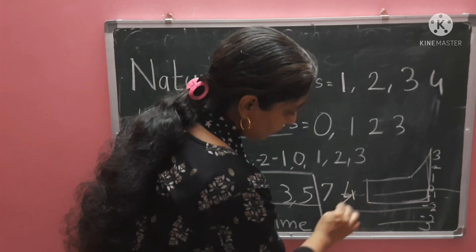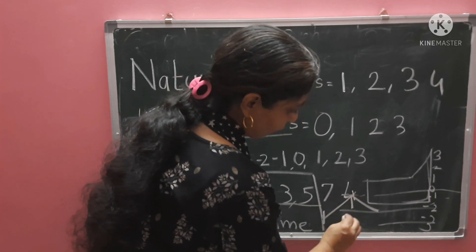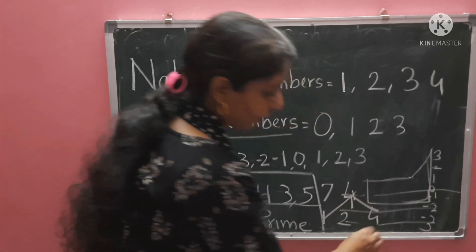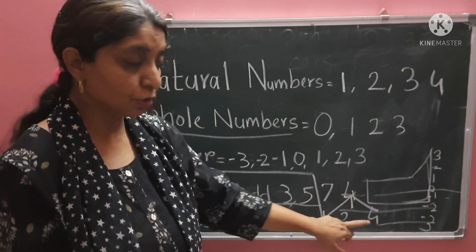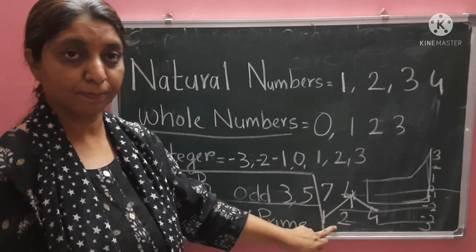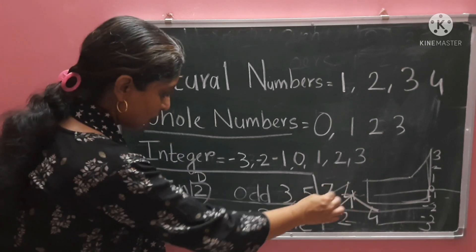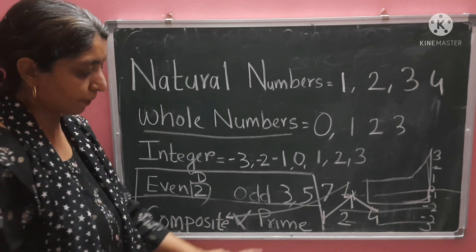4, which tables does this number come in? 4 comes in the table of 1, in the table of 2, in the table of 4. 1, 2, 4. How many factors? Three factors. Three numbers divide it. So, 4 is a composite number, not a prime number.